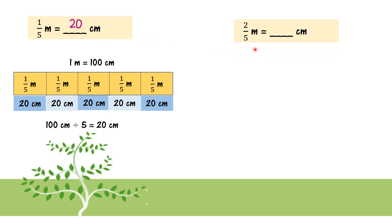Now, how about 2 over 5? So 2 over 5 means 2 parts. So 20 plus 20 is 40. And if I want 3 over 5 meters, means 3 parts. 20 plus 20 plus 20. So it's 60 cm. If I want 4 over 5 meters, that means 4 parts. 20 plus 20 plus 20 plus 20. So it's 80 cm.